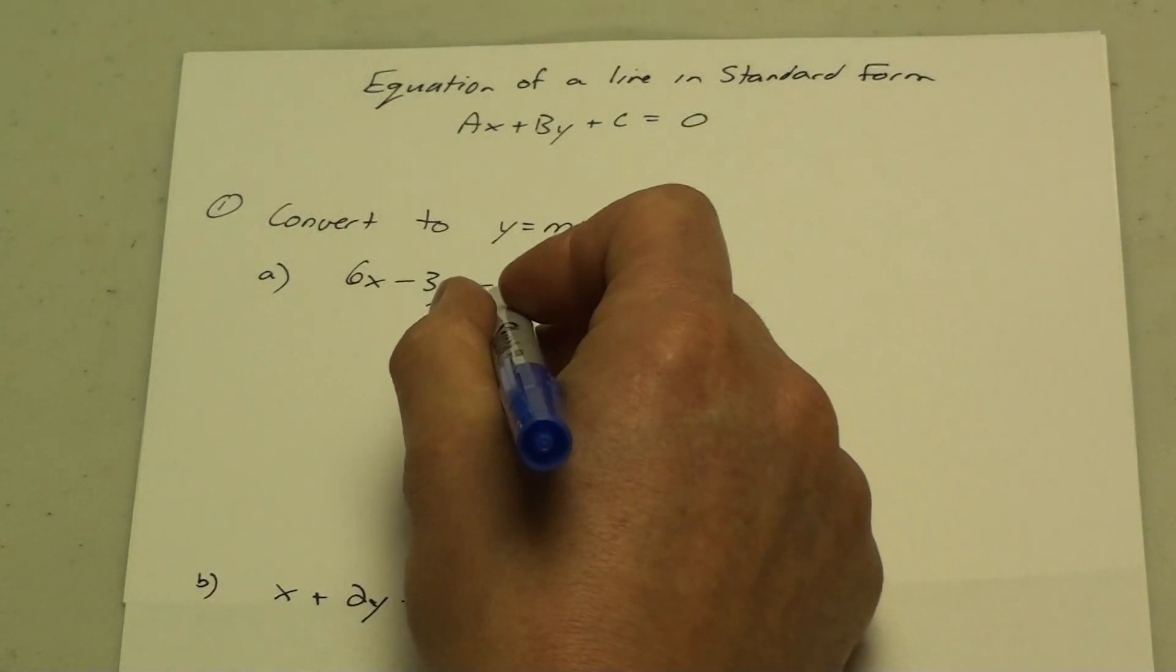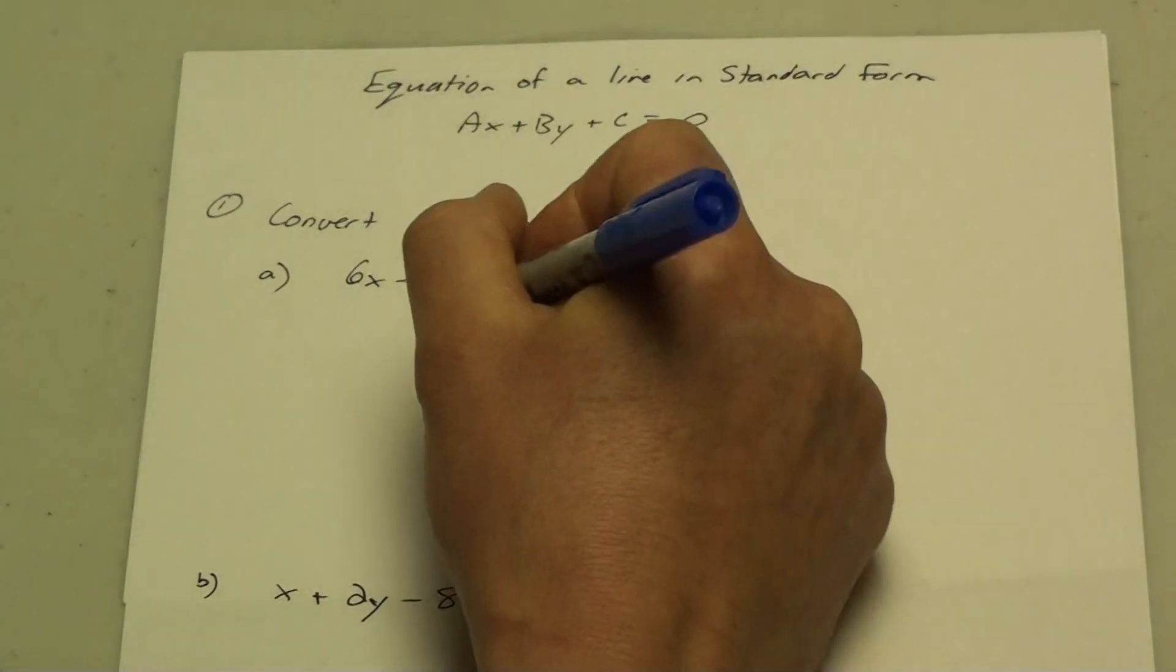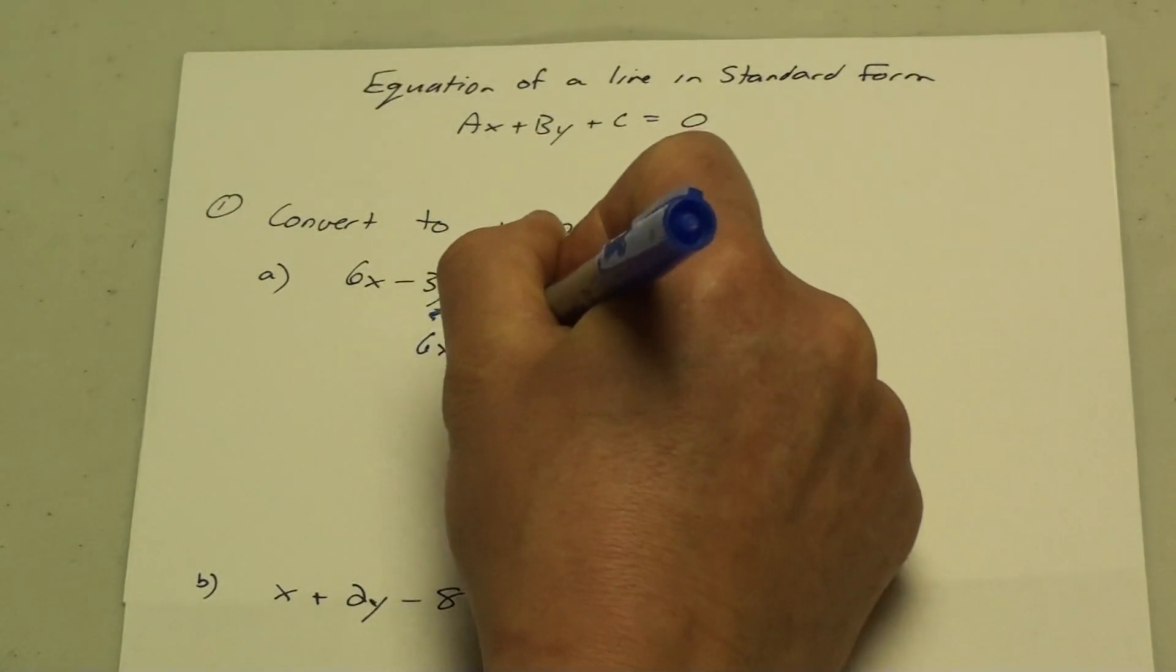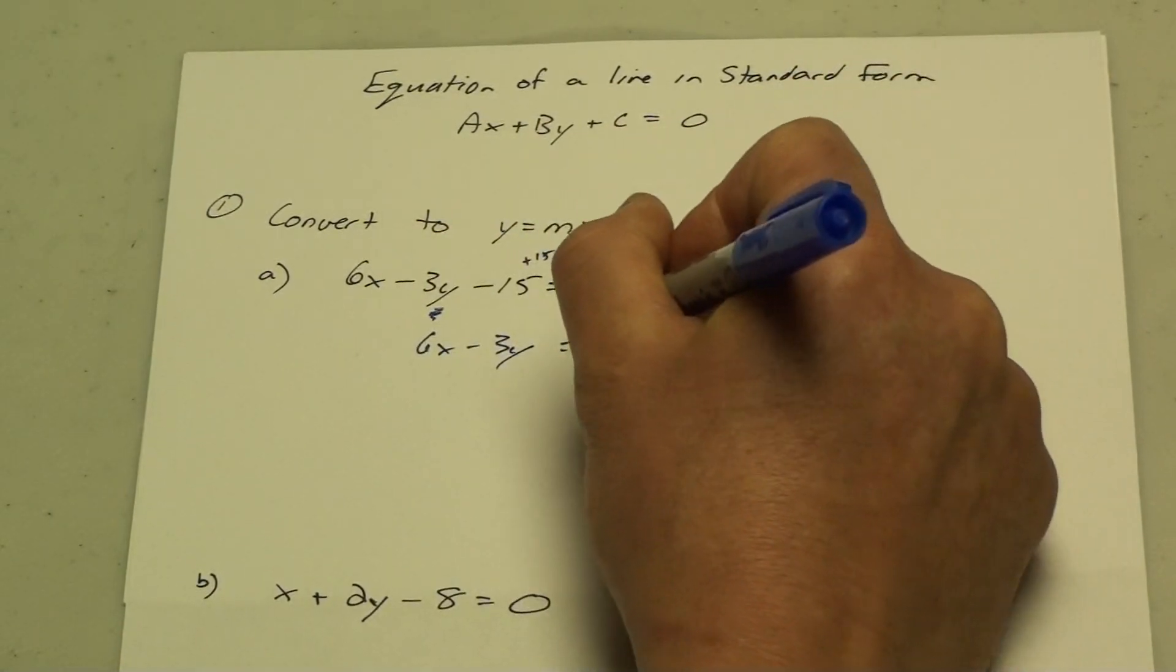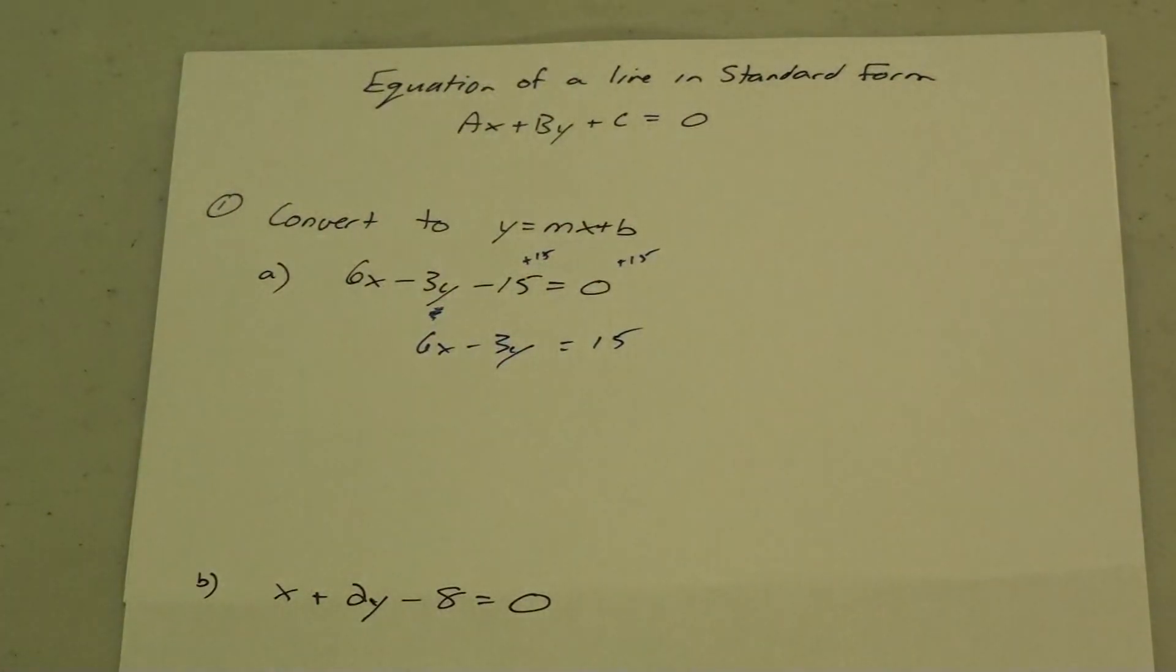First thing I'm going to move is this minus 15, so I'm going to add 15 to both sides. That's 6x minus 3y equals 15. I move the minus 15 over to the other side and it turns to a plus 15.